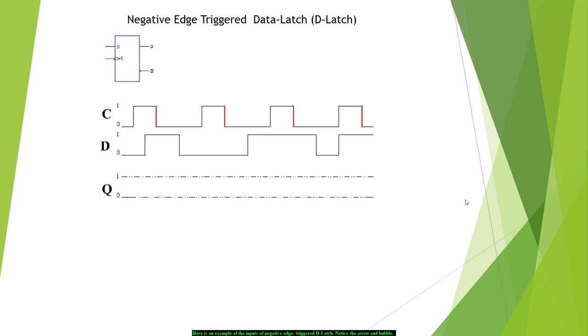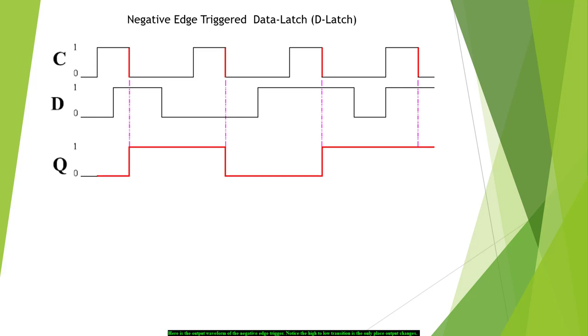Here is an example of the inputs of the negative edge trigger D-latch. Notice the arrow and bubbles. Here is the output waveform of the negative edge trigger D-latch. Notice the high to low transition is the only place the output changes.